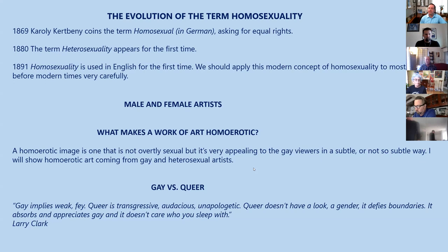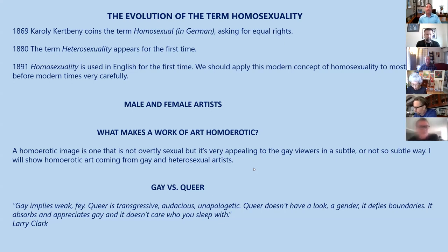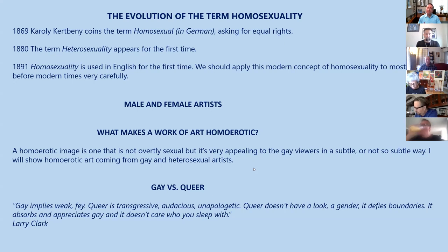I want to start with a few caveats. Sexuality in ancient Greece was very different from how we label homosexuality today. The term homosexuality appeared for the very first time in the German language, and it appeared even before the term heterosexuality. In English, the term homosexuality didn't appear until 1891. So we should be very careful when we apply this modern concept of homosexuality to any artists before modern times.